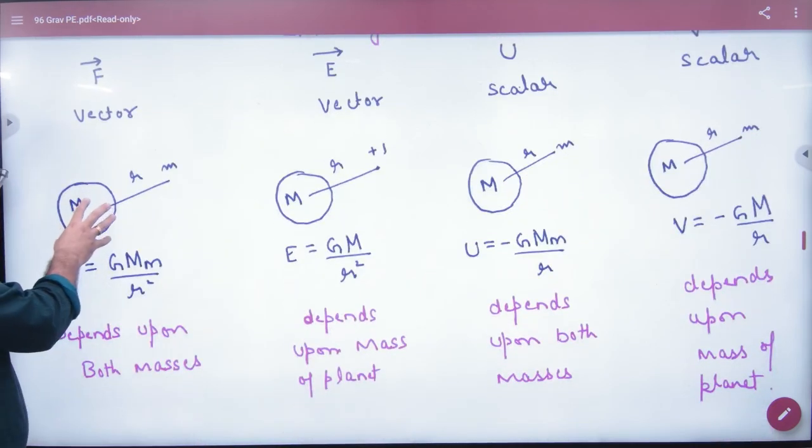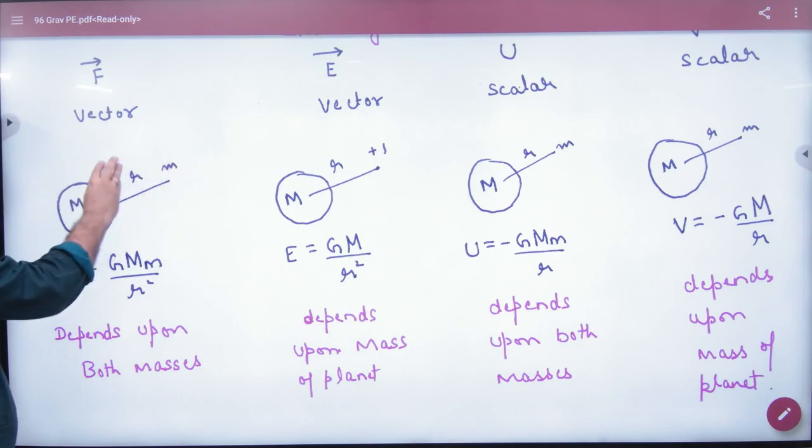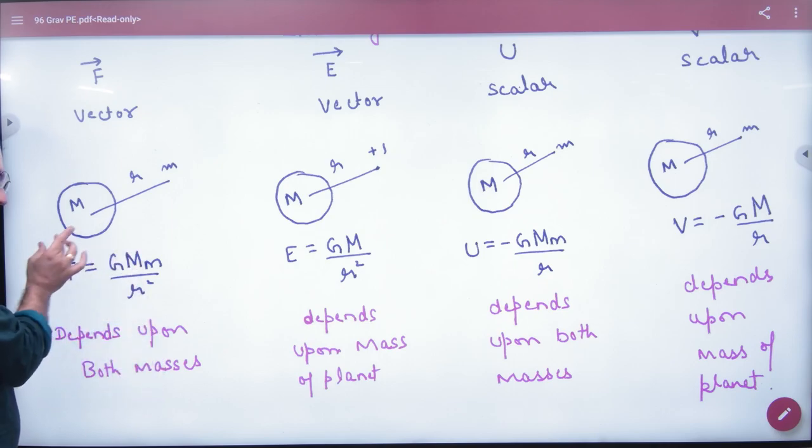Field E, ek vector quantity hai, energy aur potential, dono scalars hai. Jo gravitational force hai, uska formula, GMm by r square.